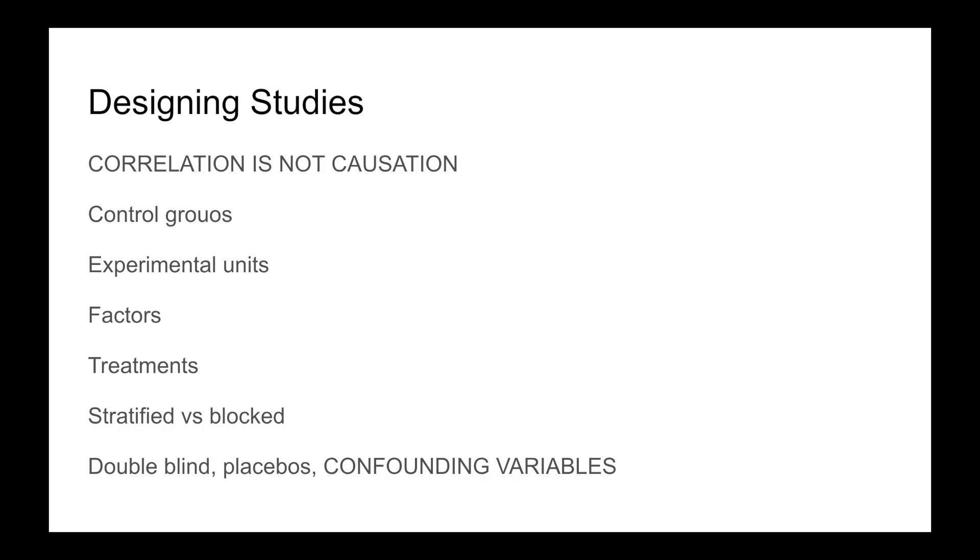Next, designing studies. This was my worst unit. I hated it. I can't even tell you why. Correlation is not causation. They always have a question about this. An experiment controls for confounding variables, so if it's well designed and not suffering from bias, like convenience sampling, non-response bias, or biased questions, which I will not go over, then yes, you may be able to draw causal relationships.